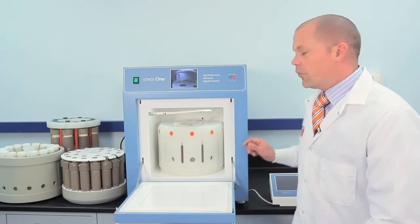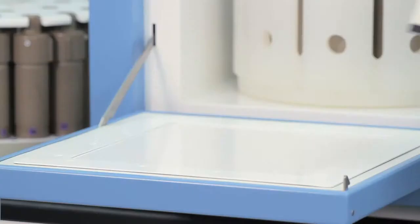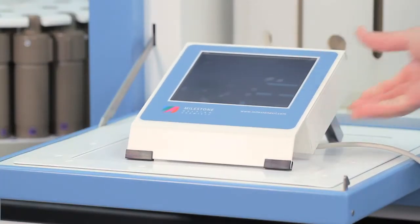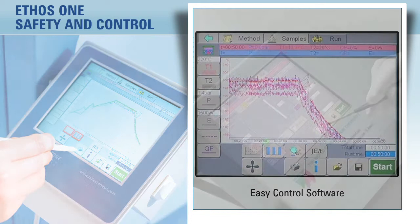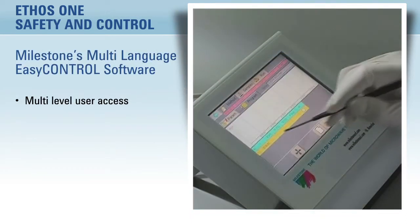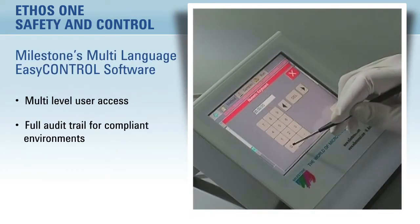Moving to the software, the Ethos One is controlled by this color touchscreen terminal, which runs Milestone's multi-language EasyControl software. The software features multi-level user access and full audit trail for compliant environments.